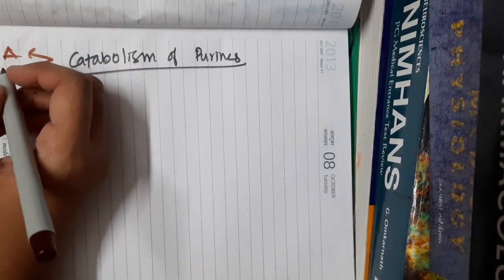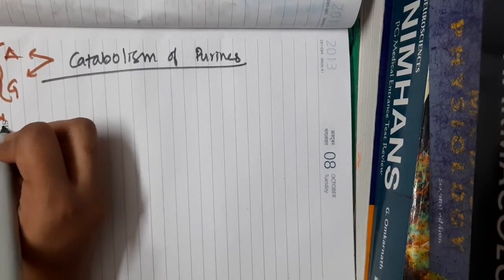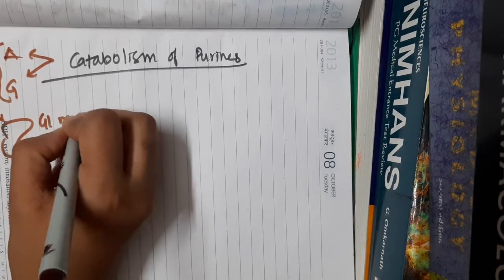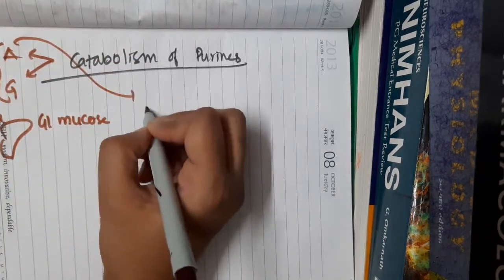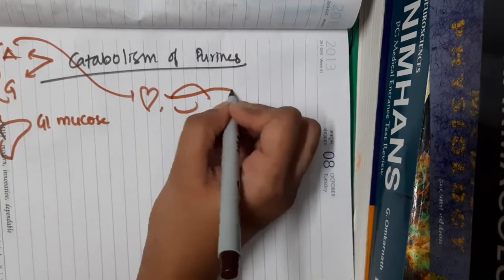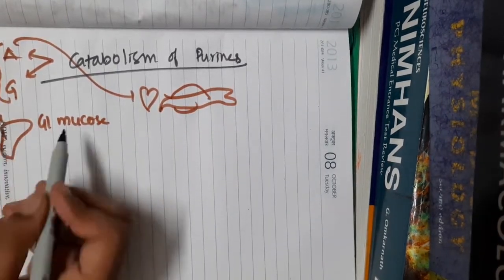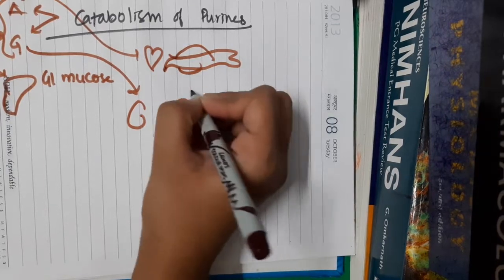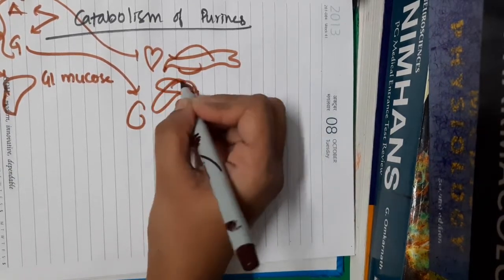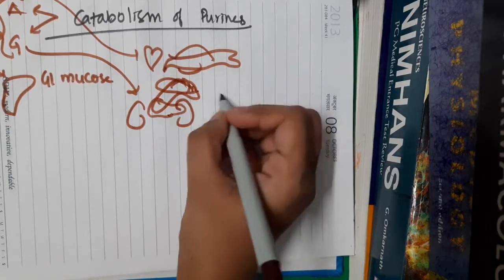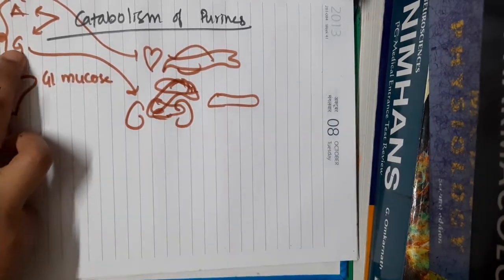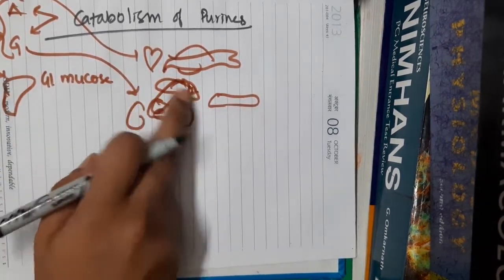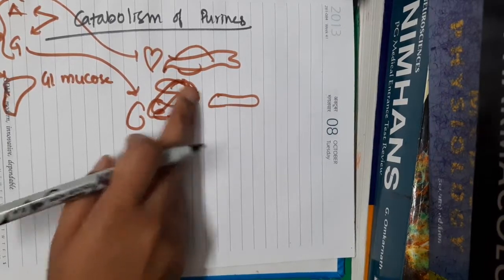Adenine catabolism and guanine catabolism both occur in the liver and GI mucosa. Adenine metabolism additionally occurs in heart and skeletal muscle, along with liver and GI mucosa. Guanine metabolism, along with liver and GI mucosa, also occurs in the kidney, spleen, and pancreas.